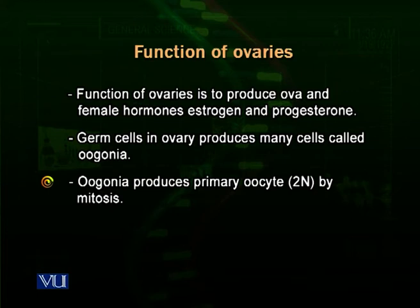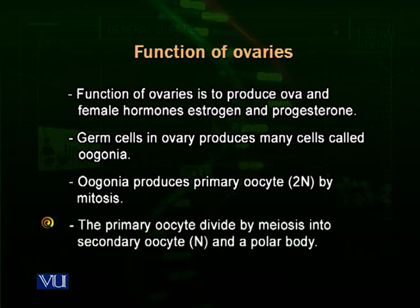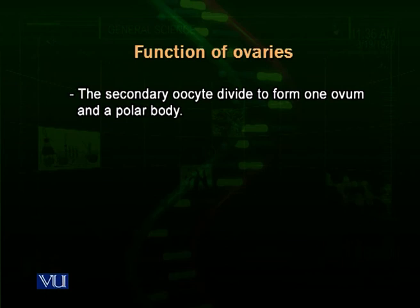The primary oocyte has 2N chromosomes because it is produced by mitosis. Then the primary oocyte divides by meiosis and is converted into a secondary oocyte with a haploid set of chromosomes. From the secondary oocyte, two more cells are produced. Three of these cells are called polar bodies and one is called the ovum.